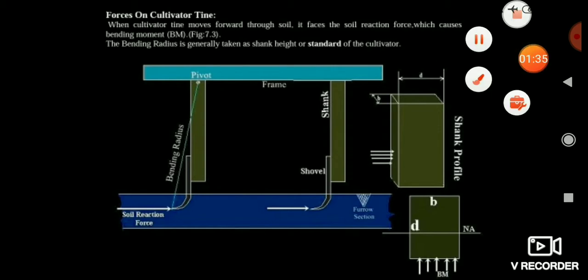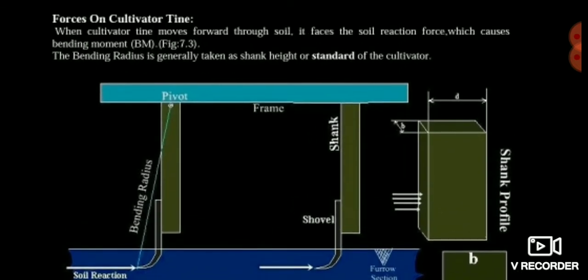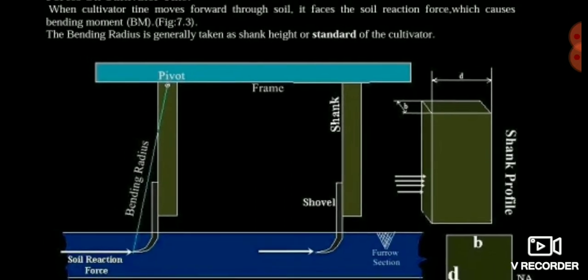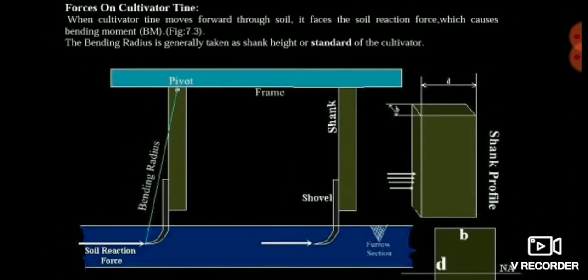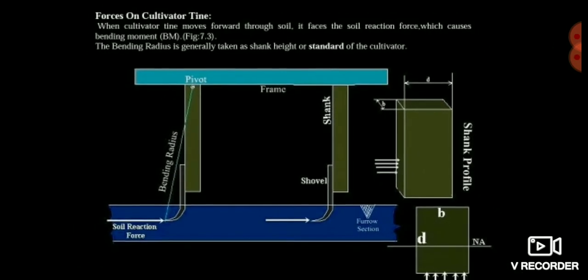You can see the symmetry of the cultivator. It has 3-4 parts. The sank is the straight rectangular surface, and the sow well is the bottom part connected to the sank which goes inside the ground and does the cultivation. The soil reaction force acts on the sow well, and the bending radius is simply the distance between the pivot and the soil reaction force.